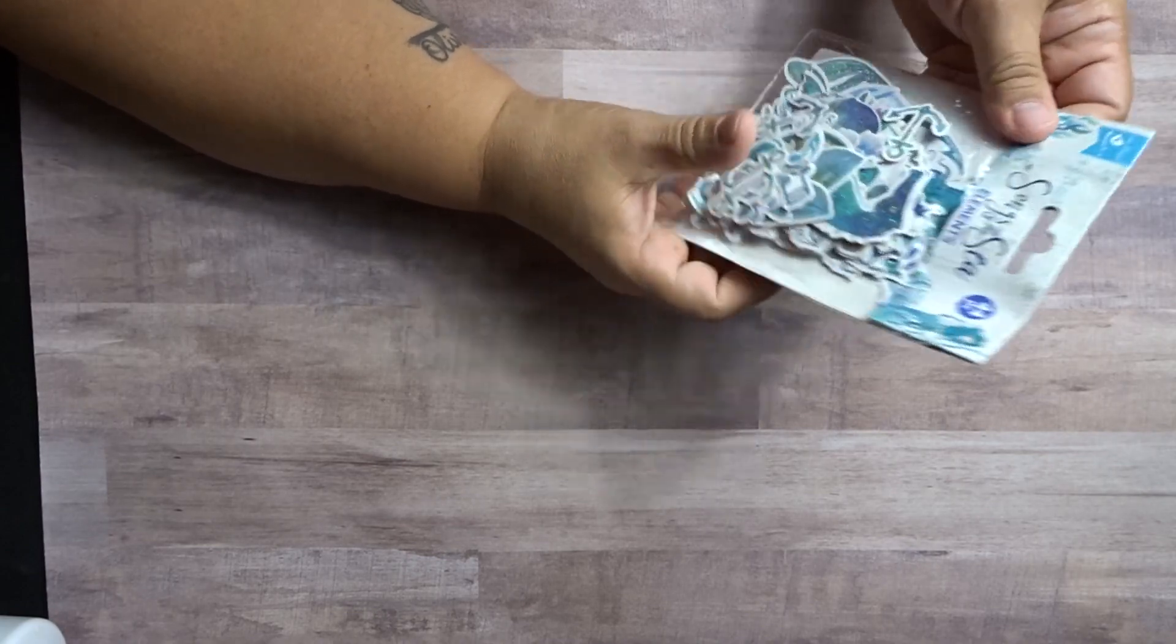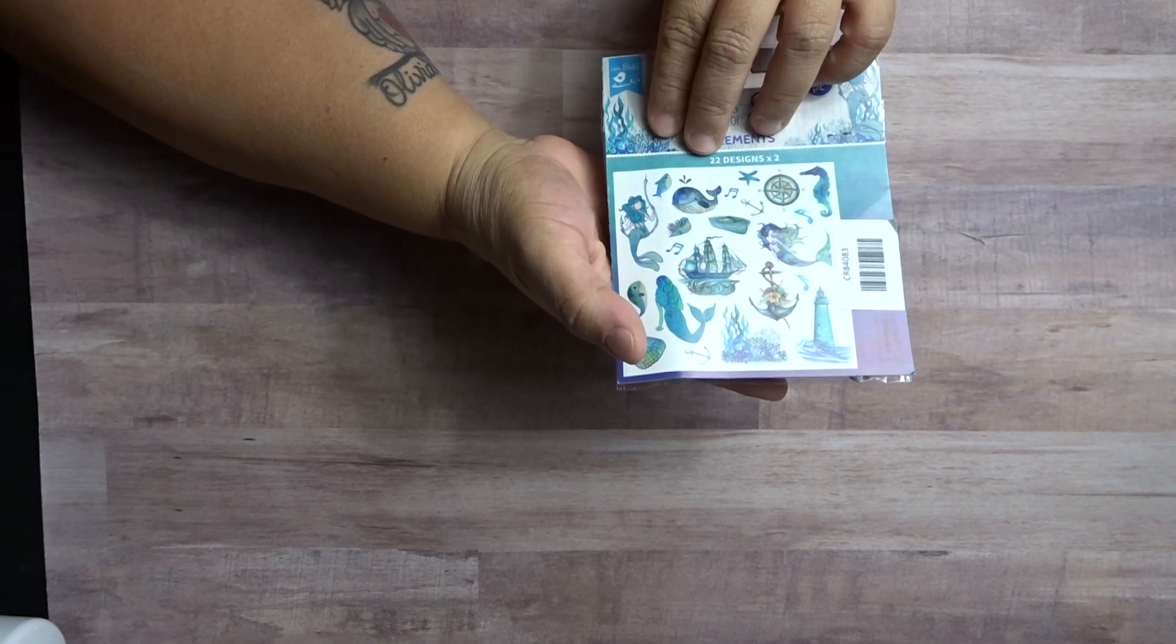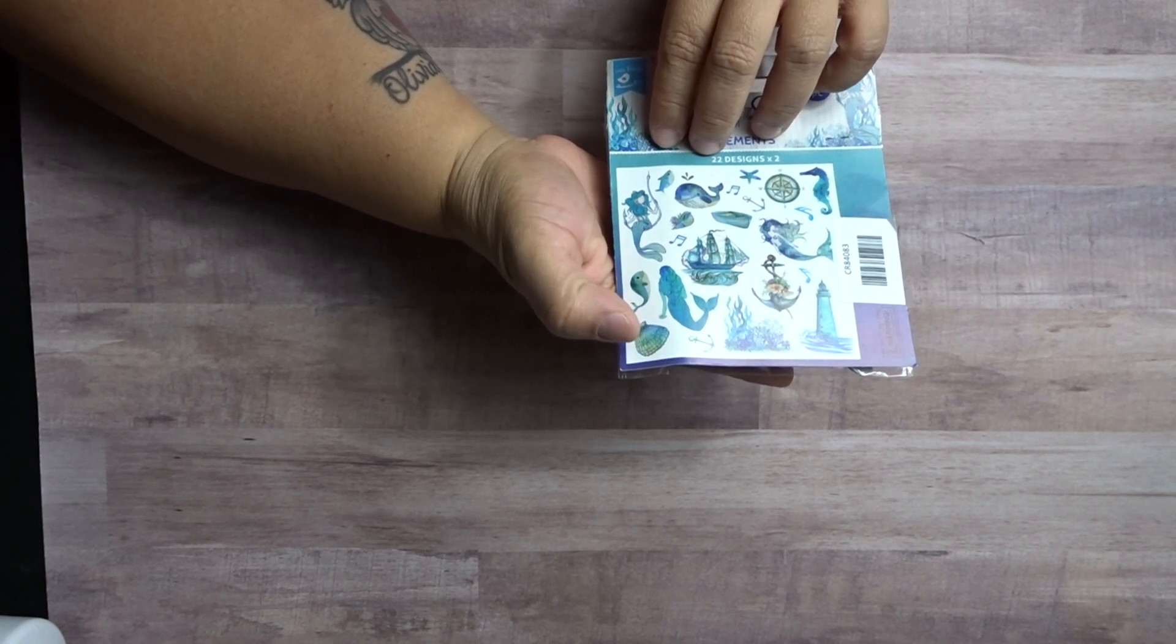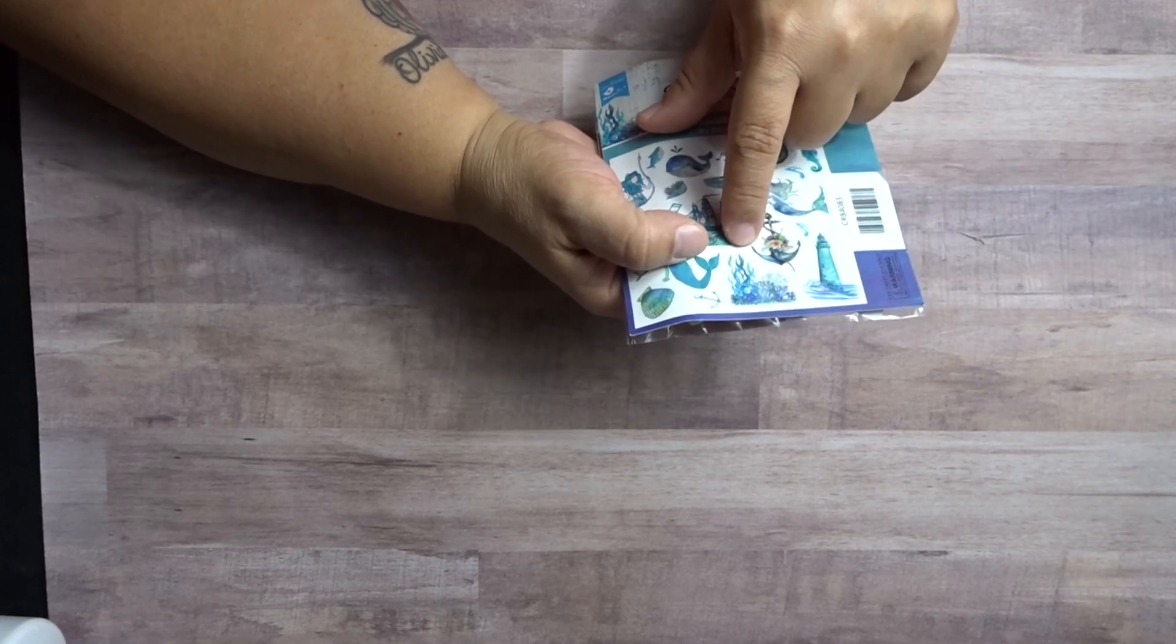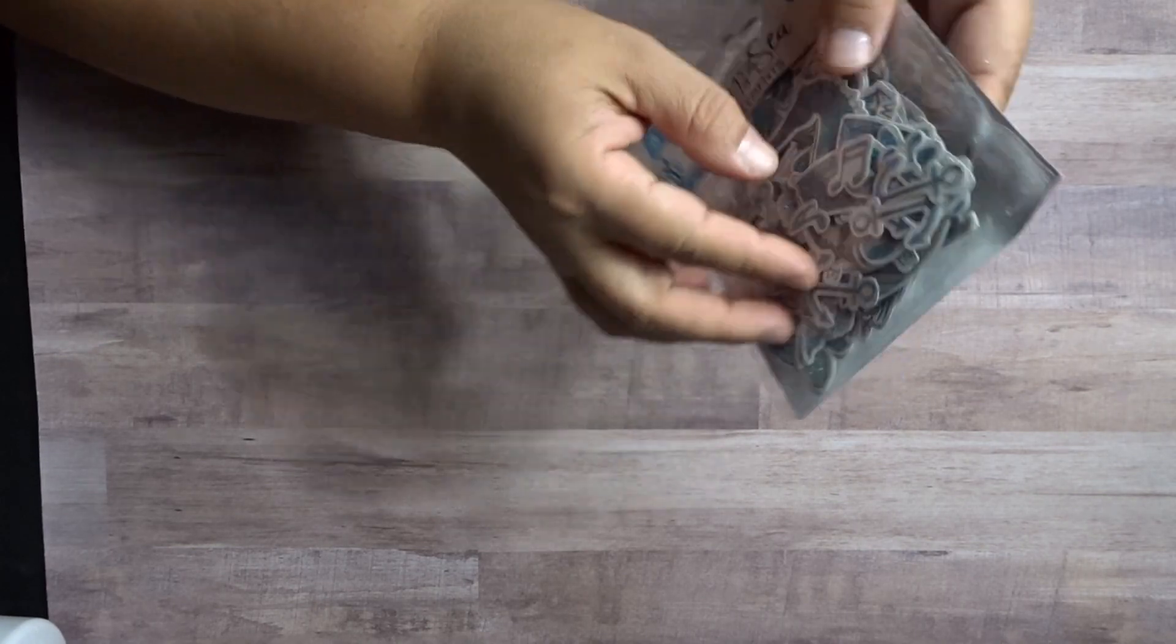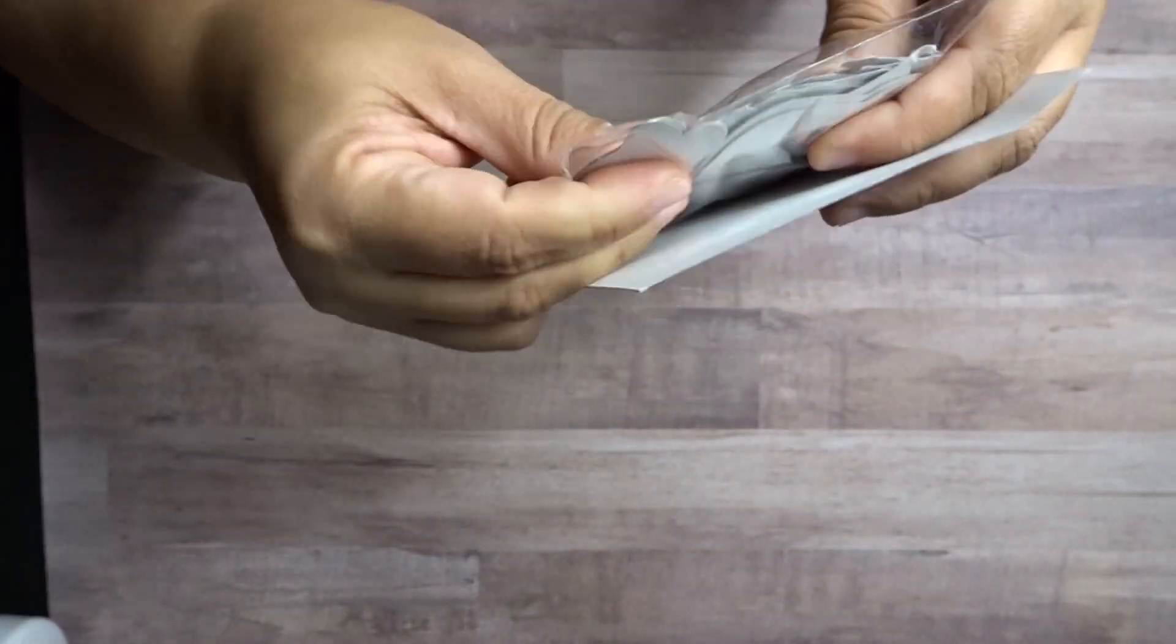Now, these are Song of the Sea Elements. They are mermaids, whales, fishies, shells, the lighthouse, the anchor, the little corals. Let me see. They're pretty thick. They're really sturdy.